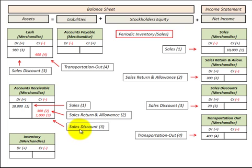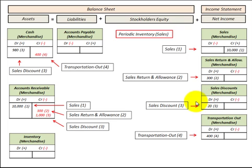Say we have a sales discount. We receive $1,000, so we reduce accounts receivable by $1,000. The sales discount — let's say 2% of that $1,000, so $20 — we debit Sales Discount and increase it by $20. The corresponding entry is a debit to cash for the balance of $980.